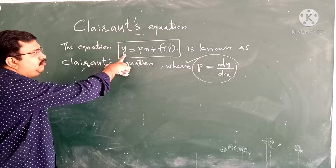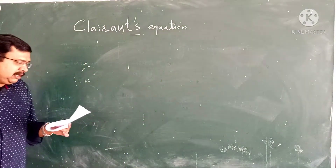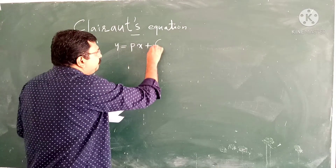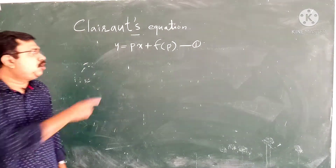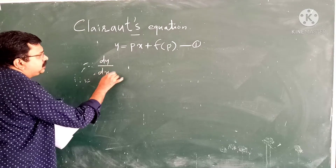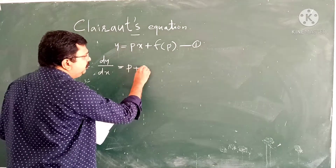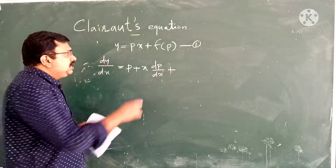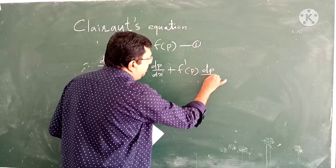An equation of the form y equal to px plus f of p is known as Clairaut equation where p equal to dy by dx. Now I am going to teach you how to solve Clairaut equation. We know that Clairaut equation is y equal to px plus f of p. Suppose this is our equation number 1. Differentiating both sides, we get dy by dx equal to, applying product rule: p into derivative of x is 1, plus x into dp by dx, plus f dash p into dp by dx.